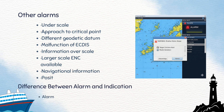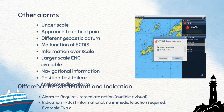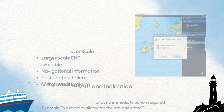Now let's see the difference between an alarm and an indication. An alarm requires immediate action and is both audible and visual. An indication is just information — no immediate action is required. For example: no chart available for the scale selected.